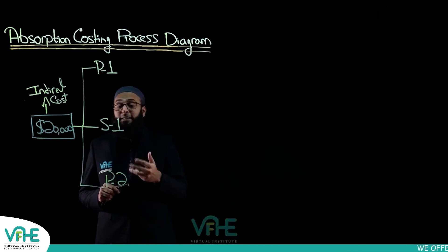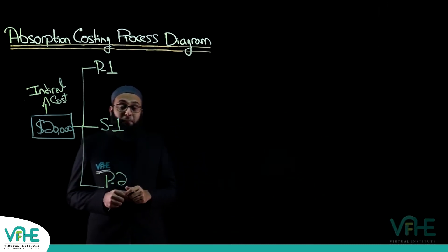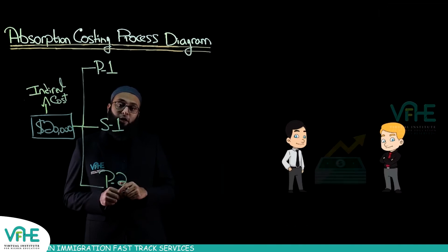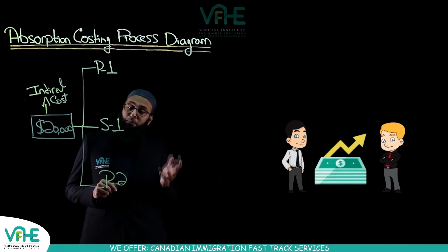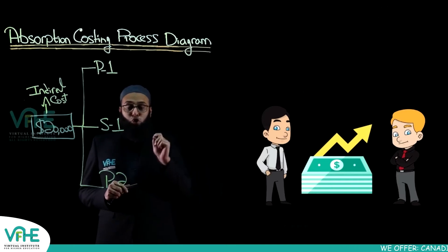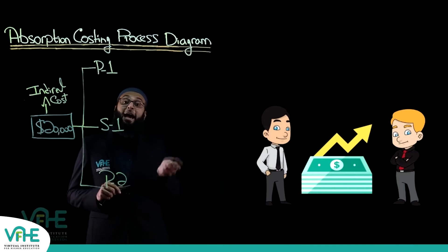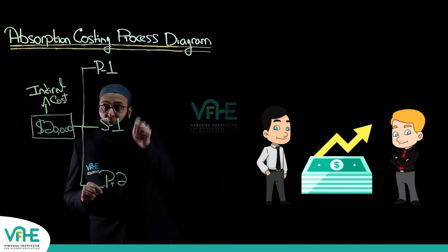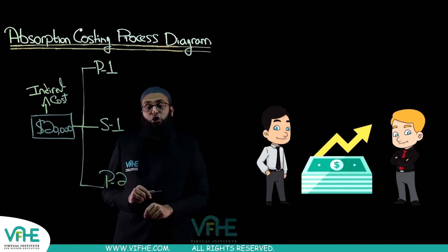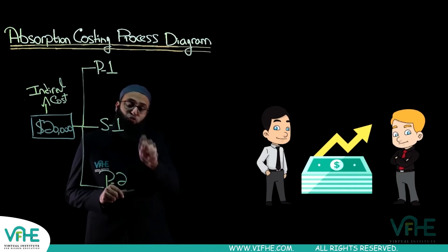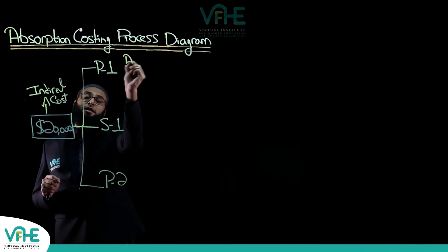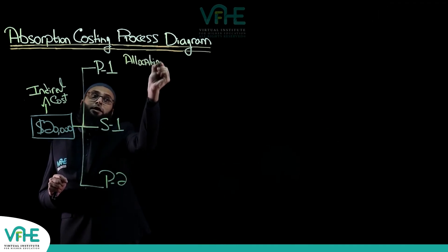Now let's take an organizational example. There are two supervisors — one responsible for production department one earning a salary of $1,000, and another responsible for production department two also earning $1,000. The cost of the first supervisor should be allocated directly to production department one, and the cost of the second supervisor should be allocated to production department two. This is basically allocation.